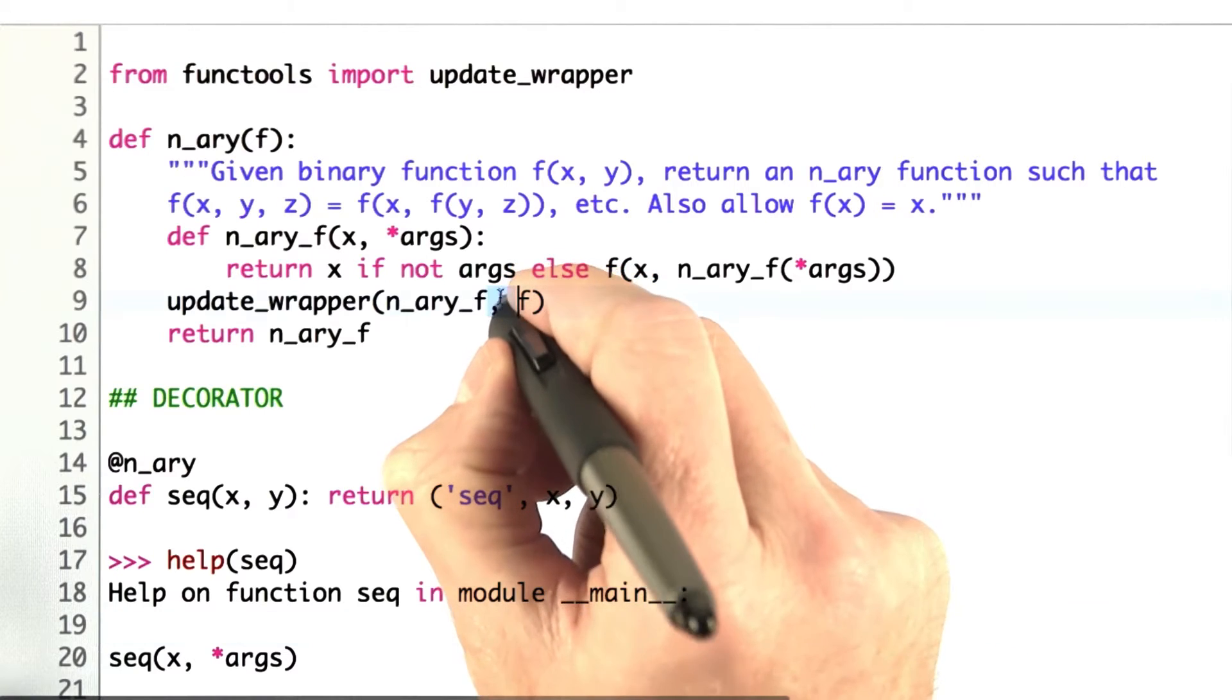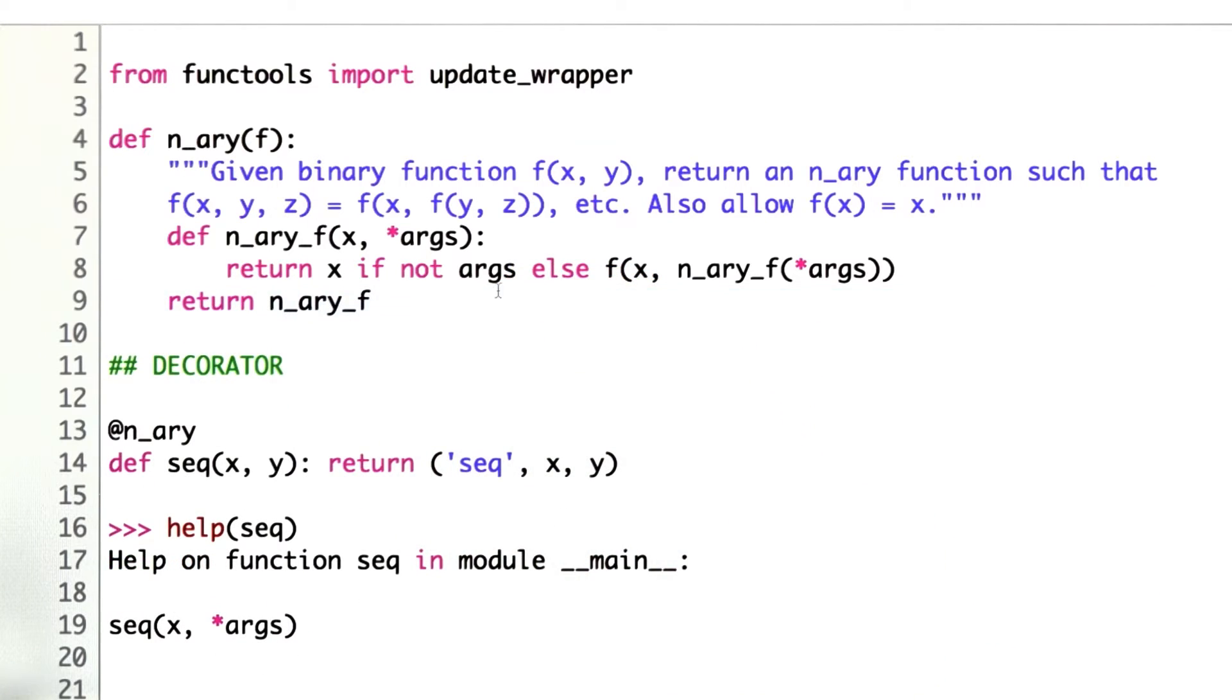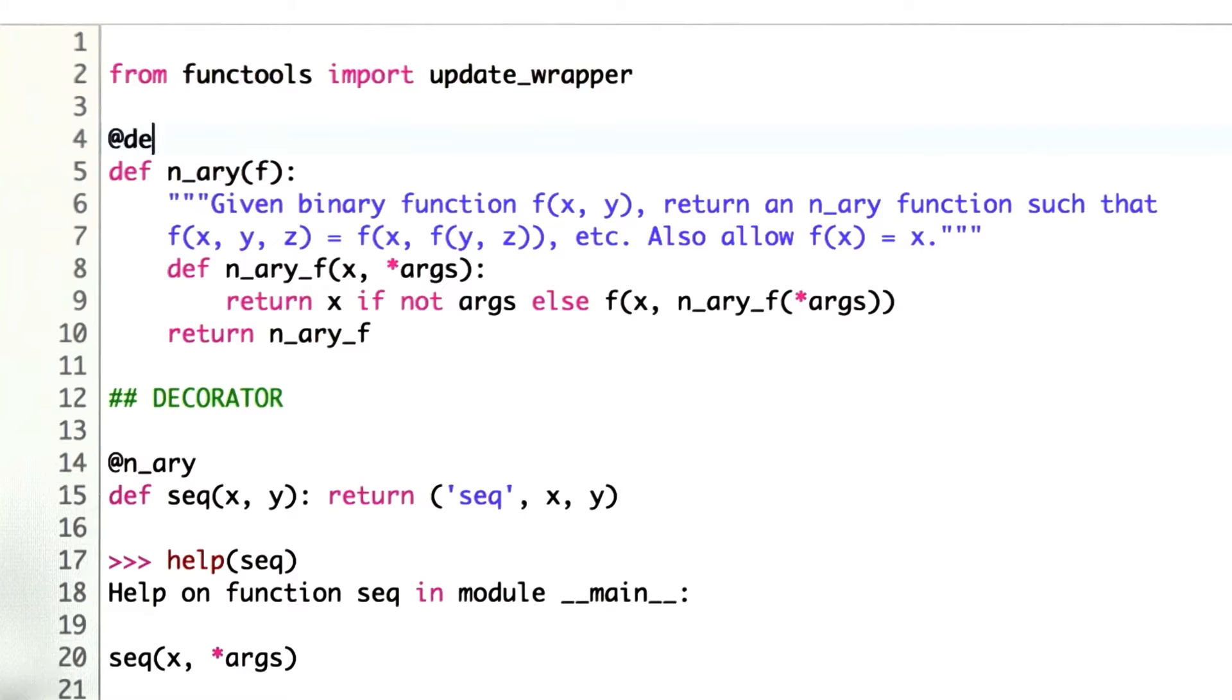Here's an idea. Let's get rid of this line. Instead, let's declare that nary is a decorator, and we'll write a definition of what it means to be a decorator in terms of updating wrappers. Then we'll be done. We've done it once and for all. We can apply it to nary, and we can apply it to any other decorator that we define.